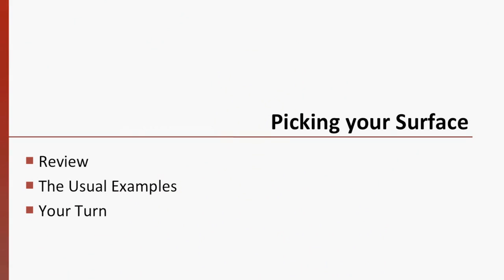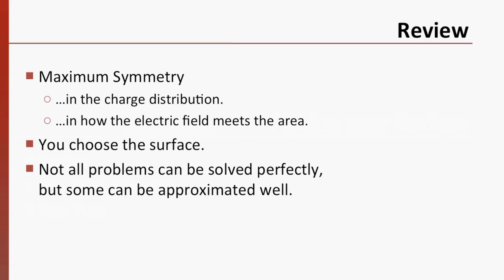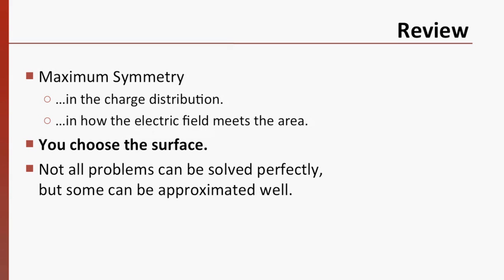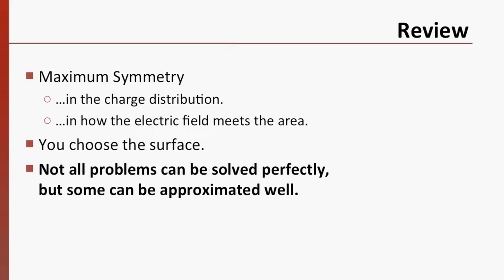Now we have the background we need. It's time to put all the pieces together and pick our Gaussian surface. We'll do a quick review, in case you missed something, and give you an example or two. After that, it's your turn to pick the best surface for a given situation. In order to simplify our integrals as much as possible, we seek out situations with as much symmetry as we can get. The symmetry in the charge distribution isn't something we can control, but our choice of surface will determine whether there is symmetry in how the electric field meets the Gaussian surface. And that's always the key. You choose the surface to make the problem easier for you. Finally, it's important to remember that in some cases, Gauss's law won't be helpful, and it's good to look for another method.